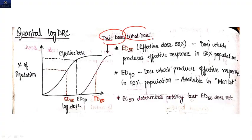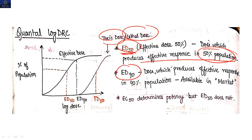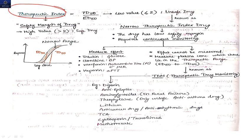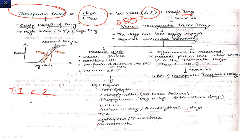In the quantal log DRC, we compare effective dose and toxic dose. ED50 is the dose that produces an effective response in 50% of the population. The therapeutic index (TI) is calculated as LD50 divided by ED50. If the TI value is less than 2, the drug is considered unsafe and is said to have a narrow therapeutic index, meaning it has a low safety margin and requires continuous monitoring.